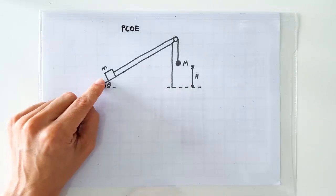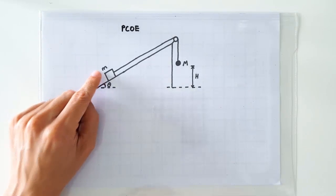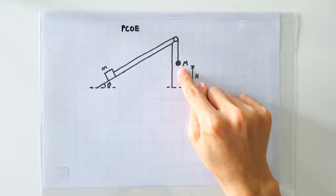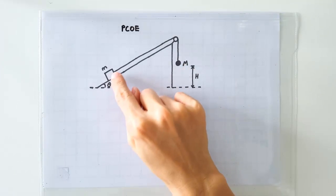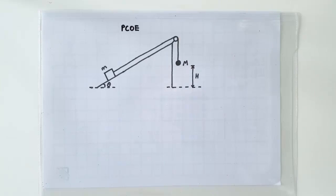So we have here a wooden block of mass small m, a lead ball of mass big M, this is a string and this is a frictionless pulley.